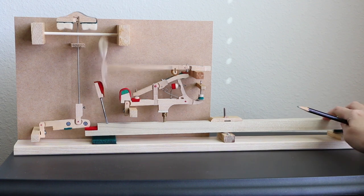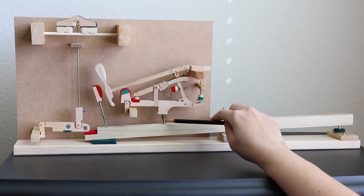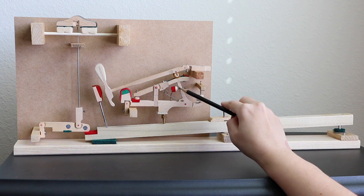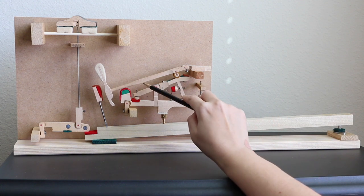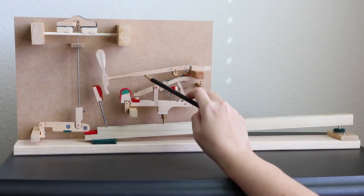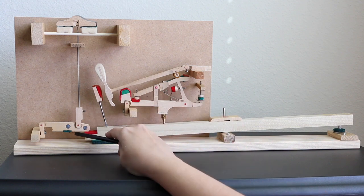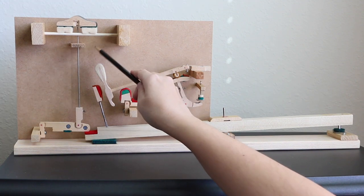So when I press a key, the caps and screw raises the action, the jack pushes the knuckle up, and this in turn raises the hammer shank and the hammer. While that's happening, the damper is up and then the hammer hits the string.